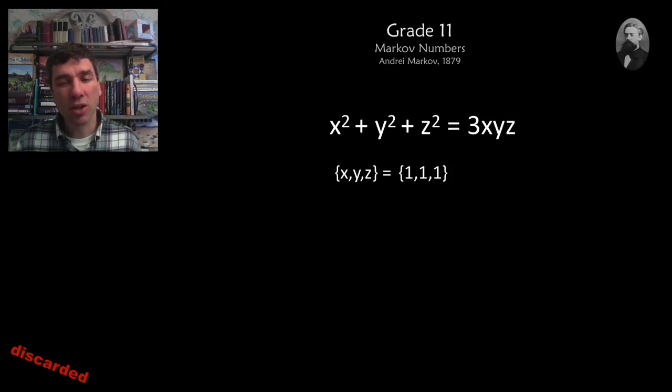But then you can fix two of those, so let's fix x and y, and let's see which other numbers z could be. Children are capable of doing that, and what you end up with is an equation in z, and the result is that 1, 1, 2 is also a solution.